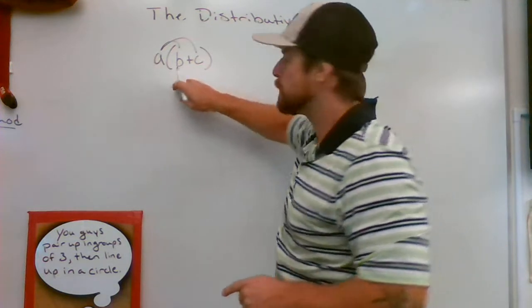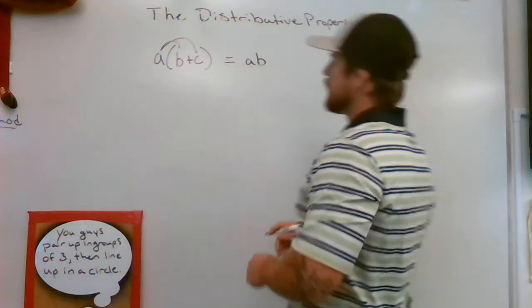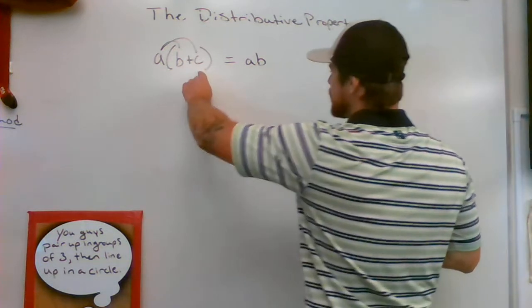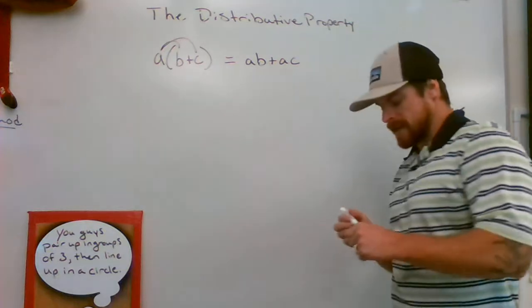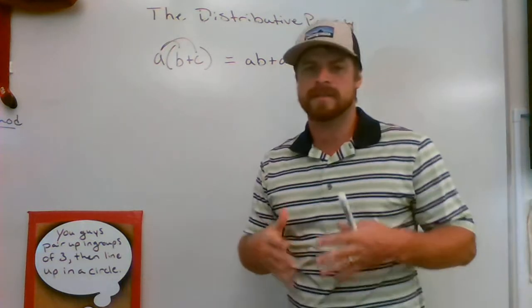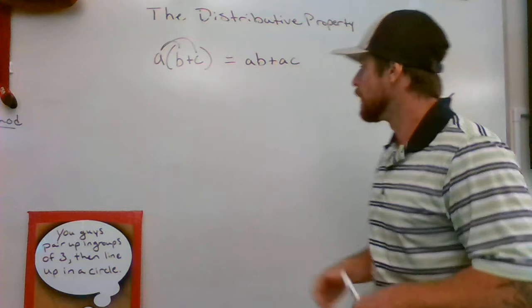So when I multiply A times B, I'm gonna be left with AB. If I multiply A times C, I'm gonna be left with AC. Okay, now that's just nothing but variables right there. Sometimes variables can be confusing. That's the algebraic example.